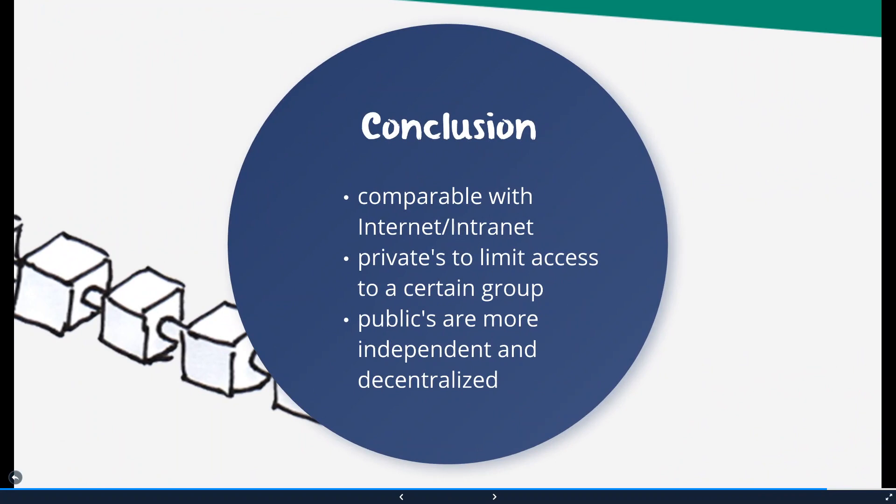Let's go to our conclusion and summarize what we've covered. The public blockchain, private blockchain, and consortium blockchain are comparable to the internet and intranet. Private or federated blockchains are indispensable for companies and close groups that need to limit network activities to a certain group of people — they offer the efficiency and transparency of blockchain technology in a protected environment that cannot be seen by outsiders. The public blockchain, on the other hand, is intended more for use by individuals, who retain control over personal data and can process transactions quickly and cost-effectively without depending on a central authority.